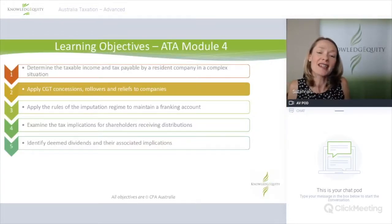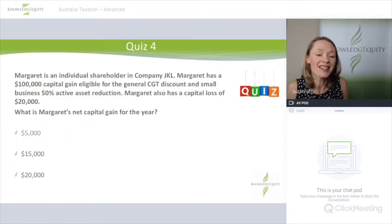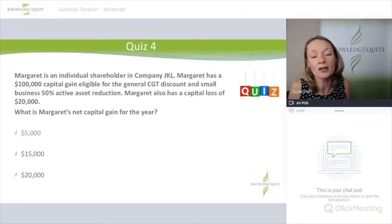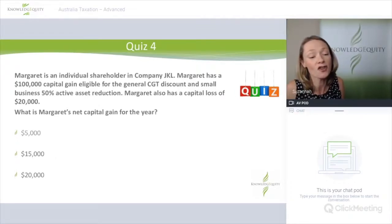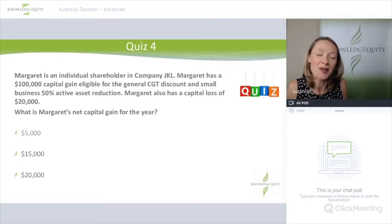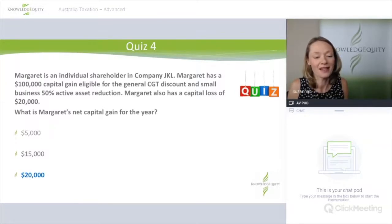We now move to the second learning objective: CGT concessions, rollovers, and relief available to companies. Let's start with a quiz on the CGT small business concessions, which are really valuable and can make a big difference when disposing of significant assets. Margaret is an individual shareholder in company JKL. She has a $100,000 capital gain eligible for both the general CGT discount and the small business 50% active asset reduction, plus a capital loss of $20,000. What is Margaret's net capital gain for the year?